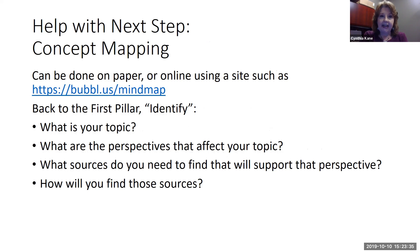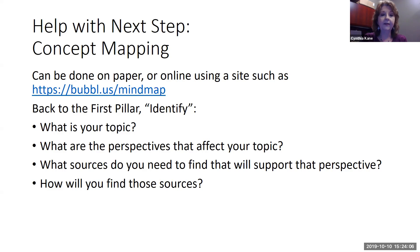There is a technique called concept mapping that really doesn't take very long at all. It can be done on paper or you can go online using a site such as BubbleUs. We're going to look at BubbleUs in just a second. What we'll do is identify a topic, identify different perspectives that affect that topic, identify the sources needed to support or find out more about those perspectives, and then figure out how we're going to find those sources of information.